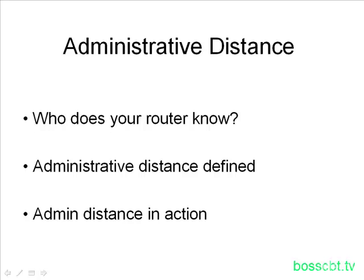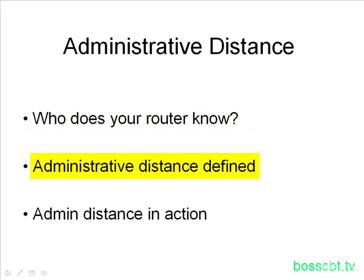Why do we need to know about this? What is administrative distance, and how is it used? That's what we're going to focus on today. We're going to look explicitly at administrative distance, and we're going to start off by asking: who does your router know? We're going to set the stage for all the possible sources that your router can learn information from. Once we do that, the need for administrative distance is going to become pretty clear. Then we'll define it, give you all the details, and look at administrative distance in action in a real routing scenario.